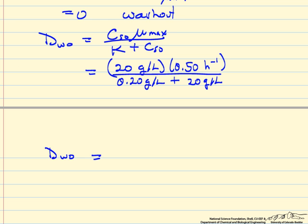So the dilution rate for washout is 0.4495 hours to the minus 1. If we do the math, grams per liter cancel, and we have units of hours to the minus 1.